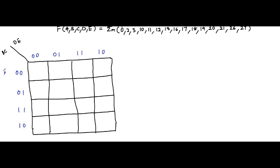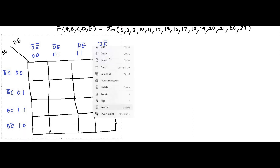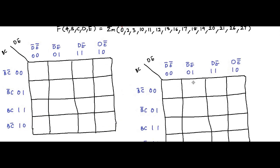The K-map axes are: B-bar C-bar, B-bar C, BC, and BC-bar on the horizontal side. On the vertical side: D-bar E-bar, D-bar E, DE, and D E-bar. By mistake I initially wrote B here — it is D-bar E-bar. The same format will be used in the second K-map as well; we will simply copy it. But the minterm cell numbers will be different.